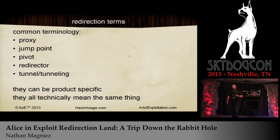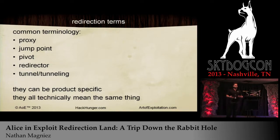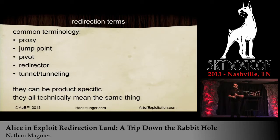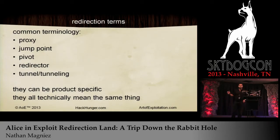Some of the common terminology for redirection: we call it redirection in our courses, but a lot of different companies have different names for it. It's commonly known as a proxy, a jump point, a pivot, or an attack source — like with Core Impact. They all basically mean the same thing. They can be product-specific, but they're all doing the same thing.